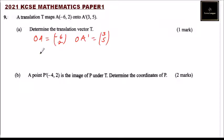So what we know is that T equals OA' minus OA, which equals, OA' is (3, 5), and we subtract OA which is (-6, 2).